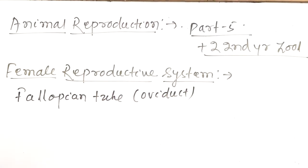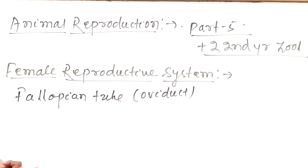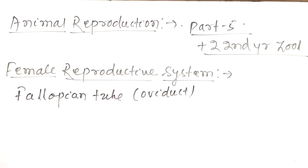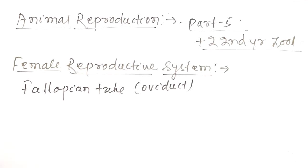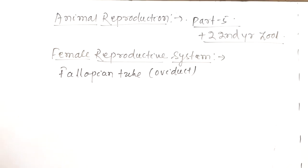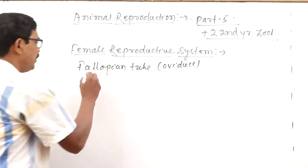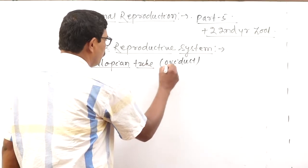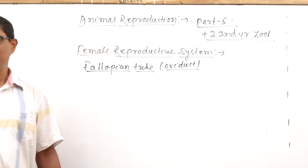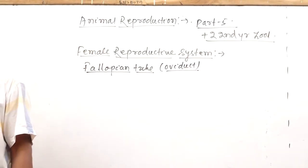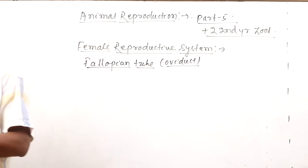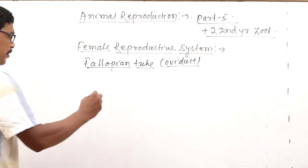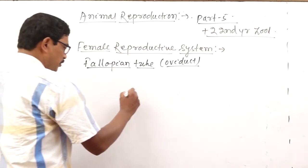Good morning to everybody. Let us start the next part of the female reproductive system. That is called the fallopian tube. It is also called as the oviduct. It is located very close to the uterus.